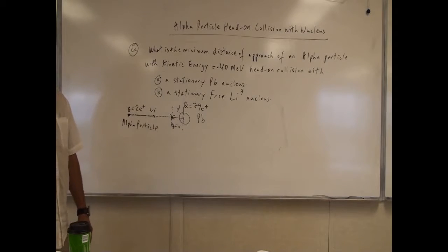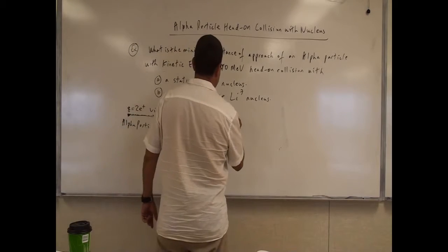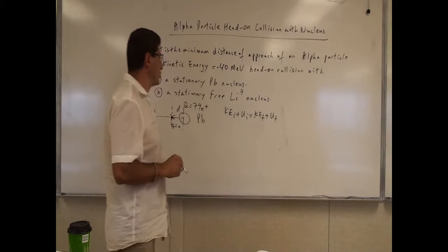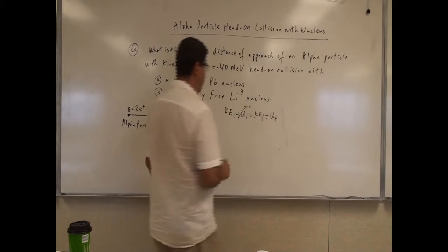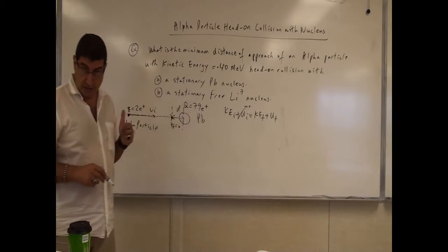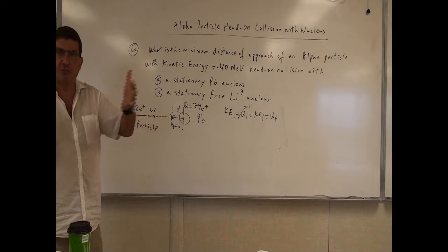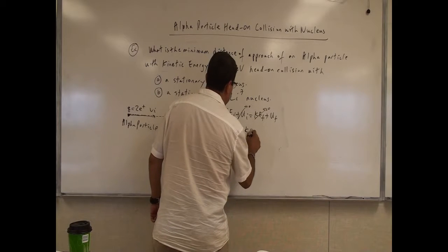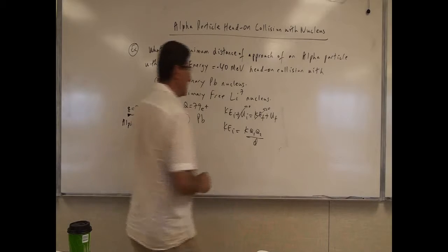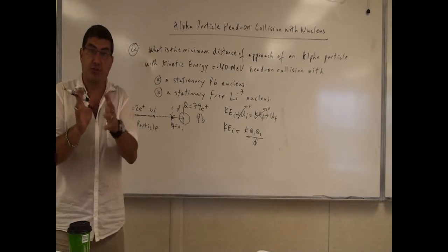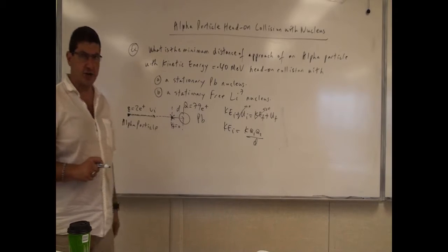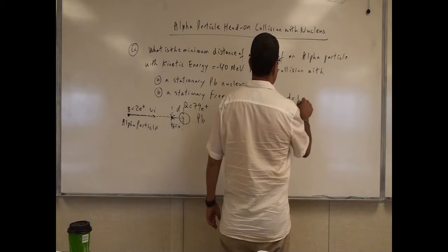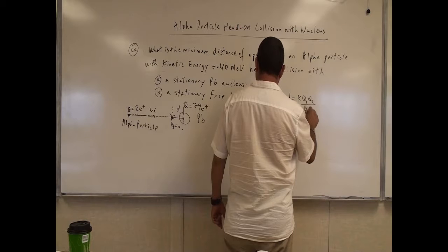We're going to conserve kinetic and potential energy, saying initial kinetic energy plus initial potential energy equals final kinetic energy plus final potential energy. The initial potential energy is zero because the alpha particle is initially far from the lead nucleus. The final kinetic energy is also zero. So we have KQ1Q2 over D as the final potential energy, and we solve for D: D equals KQ1Q2 over kinetic energy.